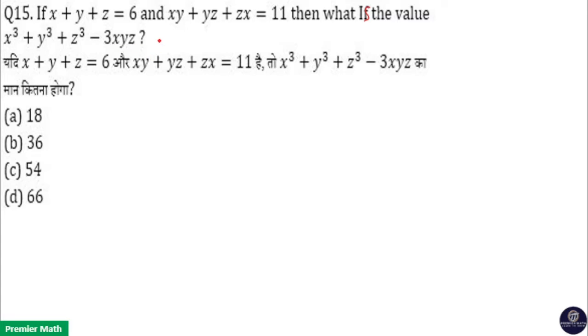If you know the formula well, you can directly write the answer from the question itself. That is 6 into 6 square minus 3 into 11, which equals 6 into 36 minus 33. That equals 6 into 3, which is 18. Option a is your answer.